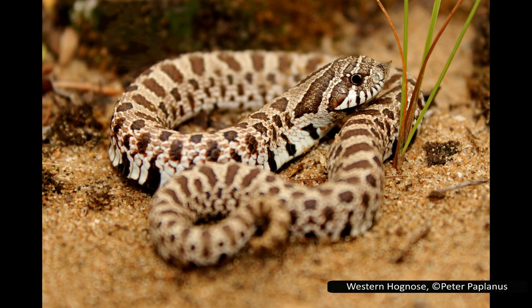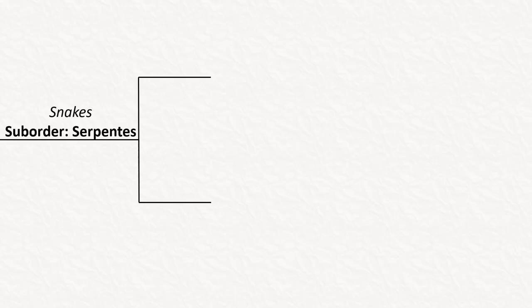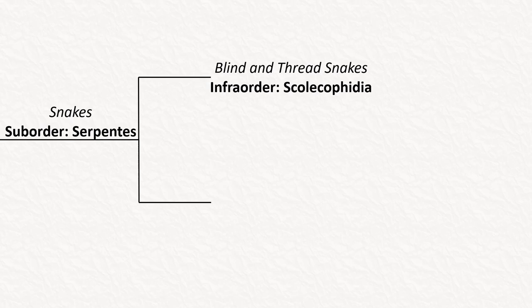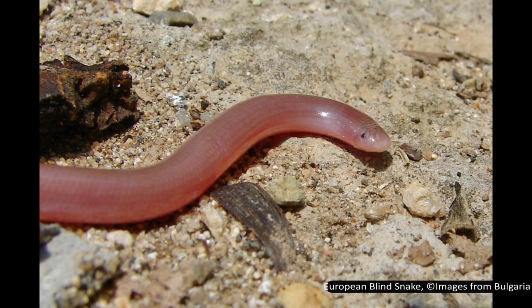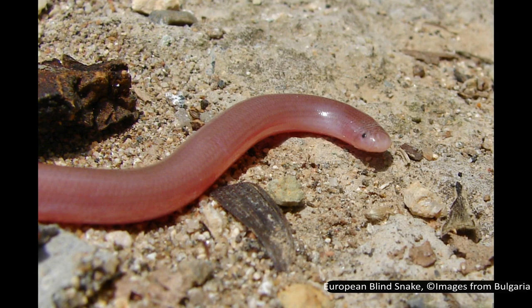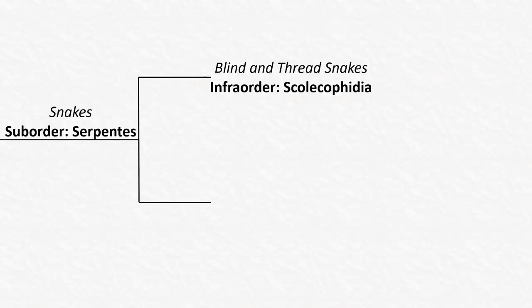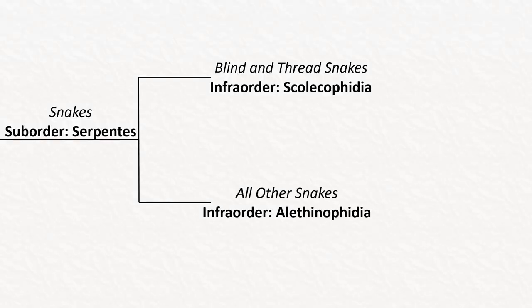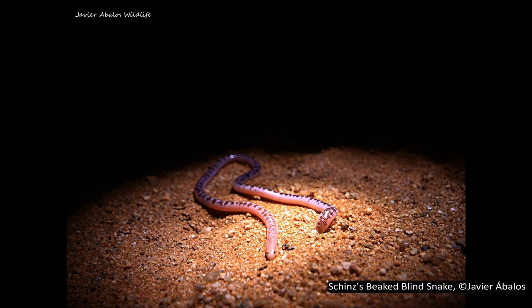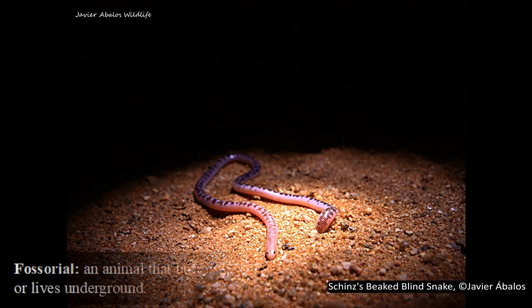So, with the preamble out of the way, let's start looking at some snakes. There are two infraorders in Serpentes. The first is Scolecophidia, which contains the blind and thread snakes — considered the least related to all other snakes. It is extremely unlikely that you have heard of any of them before unless you regularly research snakes. The other infraorder is Alethinophidia, which contains around 95% of all snakes. The main feature shared by snakes in Scolecophidia is their fossorial lifestyle, as they spend their time burrowing underground.